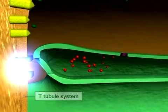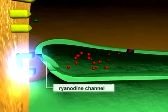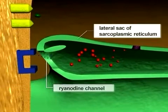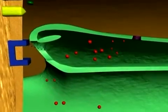As the action potential encounters DHP receptors in the T-tubules, it causes opening of the ryanodine calcium channels of the lateral sacs, thus allowing calcium ions to diffuse out of the lateral sacs and into the region of the myofibrils.